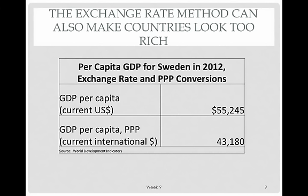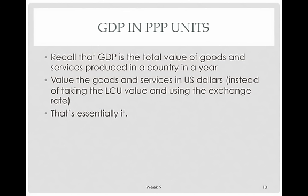The exchange rate method can also make countries look too rich. Countries with high prices, like Sweden, can get a lot of dollars for one unit of their local currency — the krona. But their local currency doesn't buy as much because prices are higher. Using the exchange rate method, it looks like Sweden's per capita GDP is $55,000. But converting to purchasing power parity dollars, Swedes can only buy $43,000 worth of goods and services. So PPP is better.